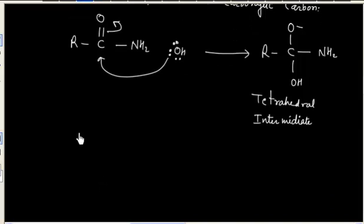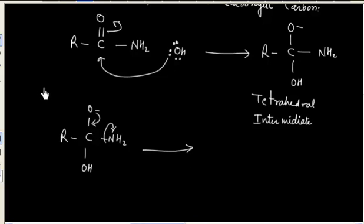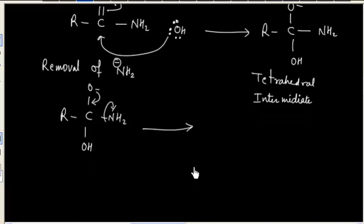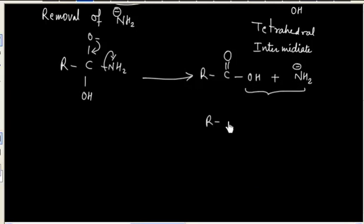Now in the next step, this tetrahedral intermediate can expel the NH2 group. O- will push this NH2 group. Basically this step is removal of NH2 with a negative charge. Now we will have acid plus NH2 minus. Then we will have acid-base reaction, so finally we will have RCOO- plus NH3. This is the acid-base reaction.